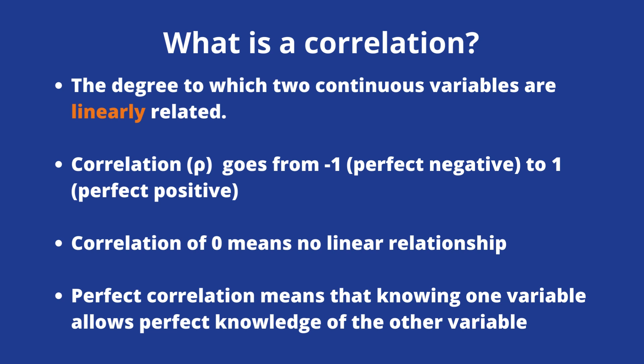Because linear is going to be really important in correlations. A correlation of zero means no linear relationship. And a perfect correlation means that if you know one variable, you perfectly know the other variable.